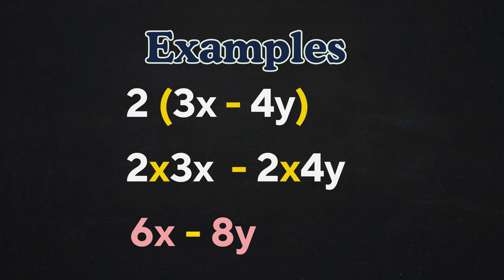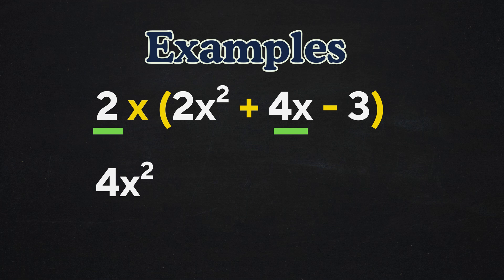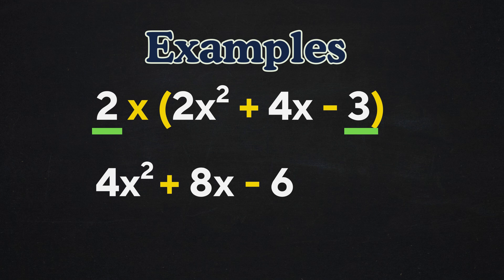Let's try a few more examples involving polynomials. 2 times the group 2x squared plus 4x minus 3 becomes 2 times 2x squared, which is 4x squared, 2 times 4x, which is 8x, and 2 times negative 3, which is negative 6. So the distributed form is 4x squared plus 8x minus 6.